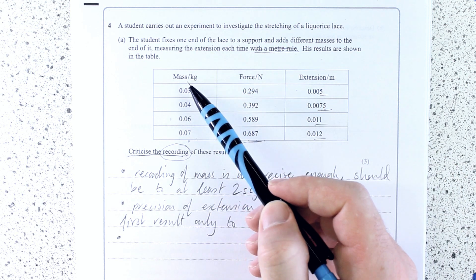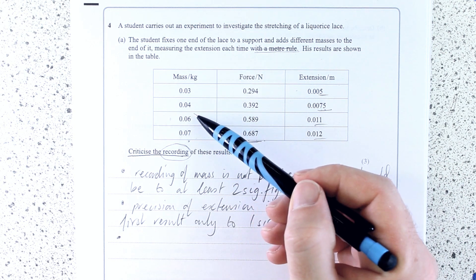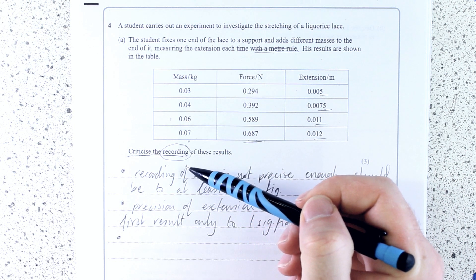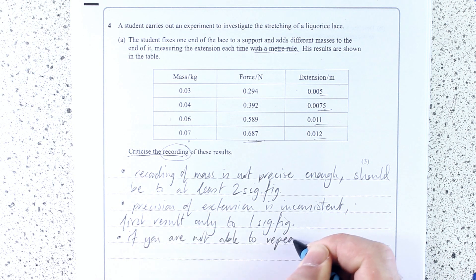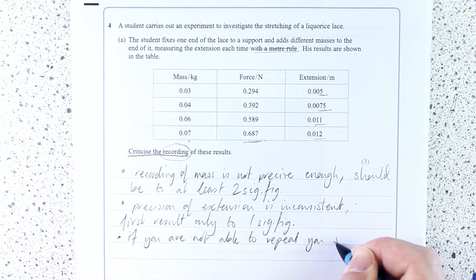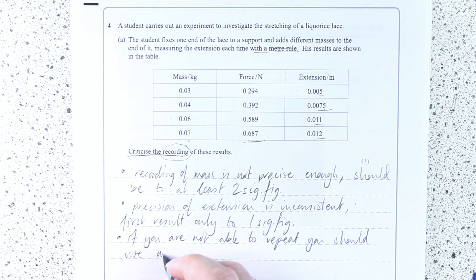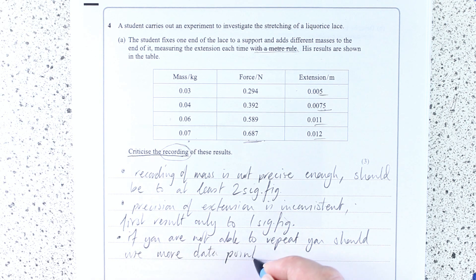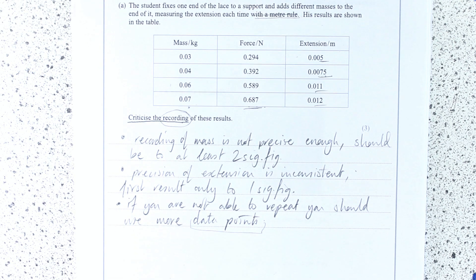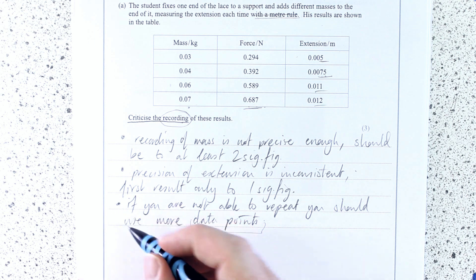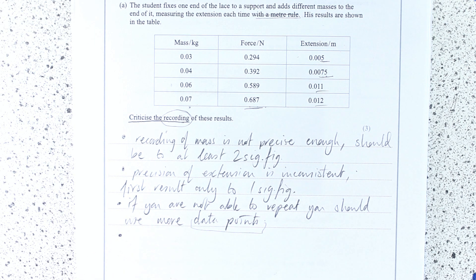If you are not going to repeat, then you should try and do more readings if possible. So you could have done 0.01, 0.02, 0.05 here, and above this as well. So if you're not able to repeat, you should use more data points. And I really think, actually, with most of physics at A level, be thinking about more data points rather than more repeats to give you a more precise trend, or more reliable trend.